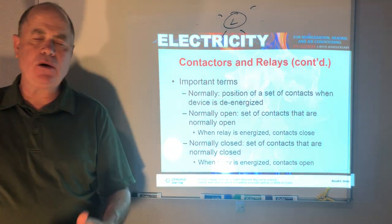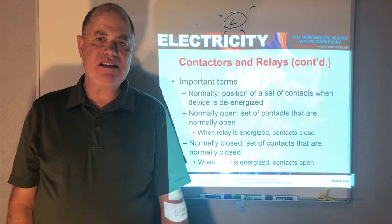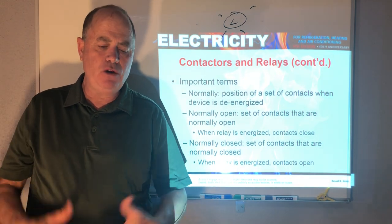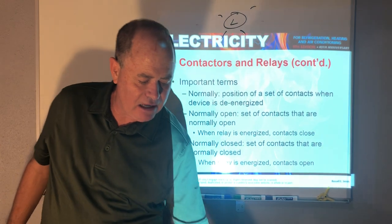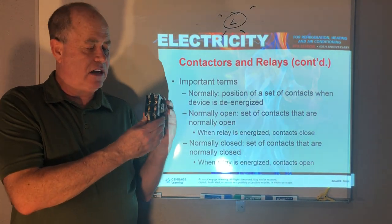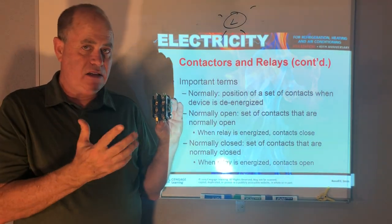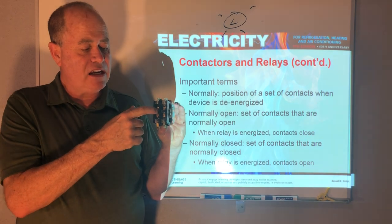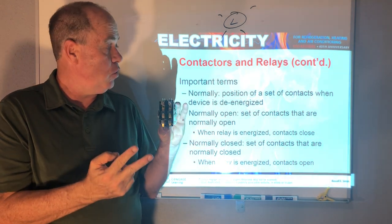The normal position is how is it normally sitting in the system, usually de-energized, but how it normally sits in the system. And like when this contactors in the system and it's just sitting there, the contacts are open and they would be drawn normally open.